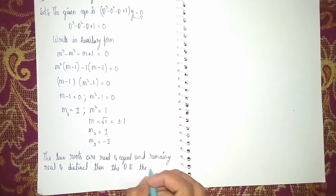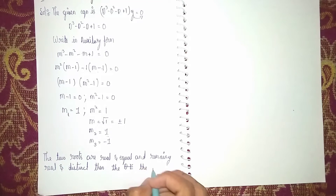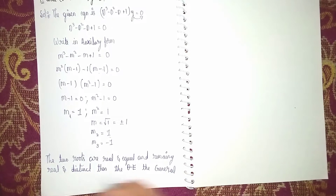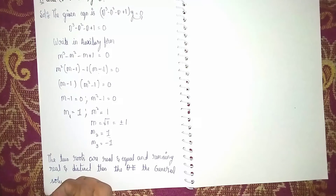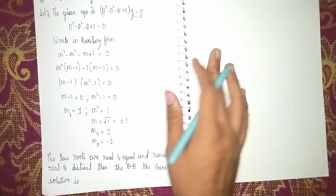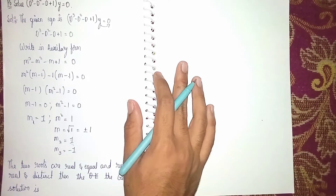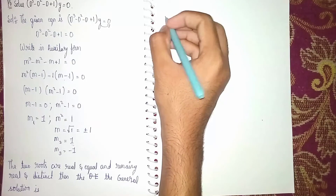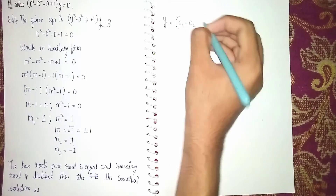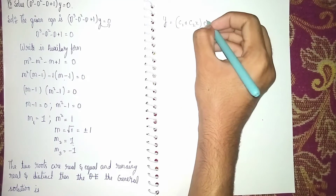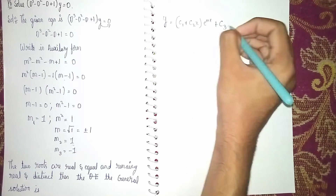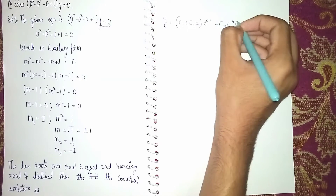The general solution is: y = (c1 + c2·x)·e^(m·x) + c3·e^(m3·x), where the first part corresponds to the repeated root and the second part to the distinct root.